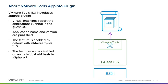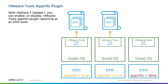VMware Tools 11.0 introduces the AppInfo plugin. This plugin allows virtual machines to report the applications running within the guest operating system — the application name and version are published. This feature is enabled by default with VMware Tools 11.0, and in vSphere 7 it can only be disabled on an individual VM basis. With vSphere 7 Update 1, you can enable or disable VMware Tools AppInfo plugin reporting at the ESXi level.